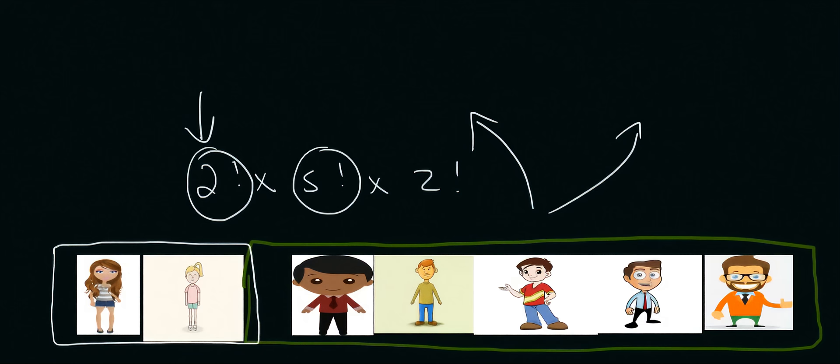Then, the 5 factorial. So, within the boys, have a look here. We've got these 5 boys. Their order can be modified. So, this guy here, he could sit there, for example. And this one there could sit on that side. And there's a whole lot of different combinations. So, just in their little option, just in their 5 seats, there would be 5 factorial different options.